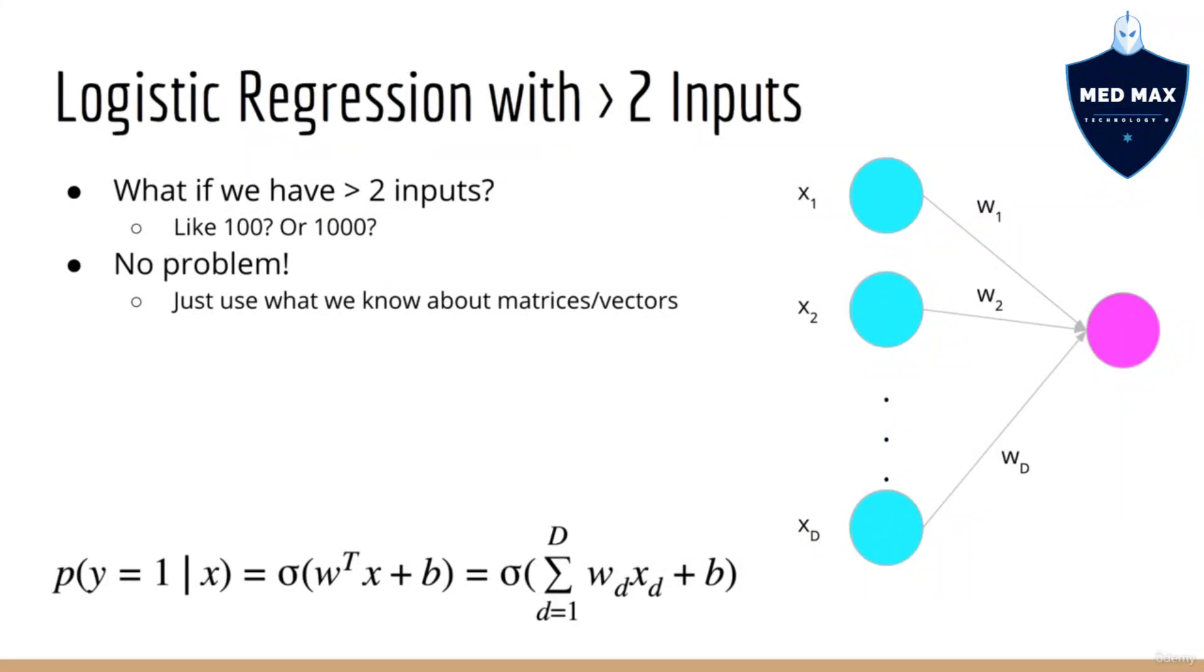You might realize that, using what we know so far, there is a little bit of a notational challenge. If we keep writing each component of x separately, we're going to run out of space. It's easy to write w1*x1 plus w2*x2 when there are only two components of x. But what if there are 100 or 1,000? Luckily, we have a mathematical way of representing this. If we consider x to be a feature vector containing each component of x, and w to be a weight vector containing each component of w, then our expression just becomes the dot product between w and x. So we can write this in a much more compact way by saying, probability of y equals 1 given x is equal to the sigmoid of w transpose x plus b.